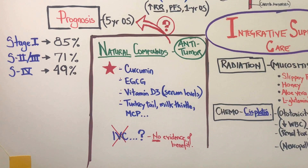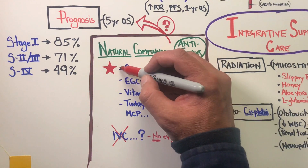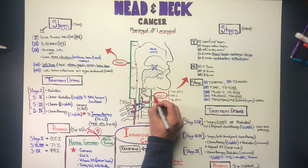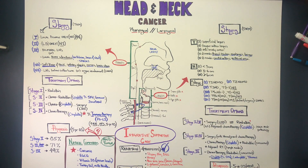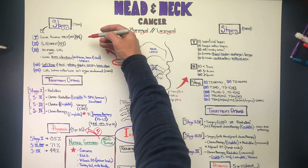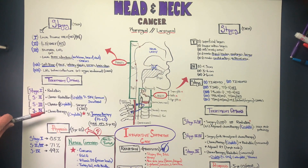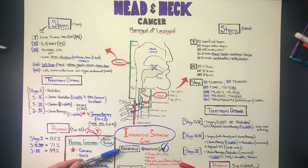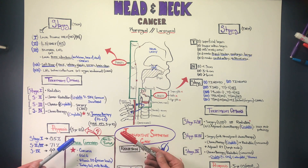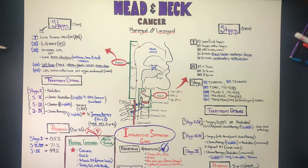We have zero evidence for IV vitamin C, which is so commonly recommended in all integrative practices for oncology, but we see no real clear benefit shown with head and neck carcinomas. So I hope this was a good review — from the laryngeal side, staging and treatment options, and from the pharyngeal carcinomas, staging and treatment options. A big piece to this is the integrative support that can be added to help with mucositis, other issues that arise on cisplatin, and the potential anti-tumor activity from natural compounds that can be safely integrated into your case.